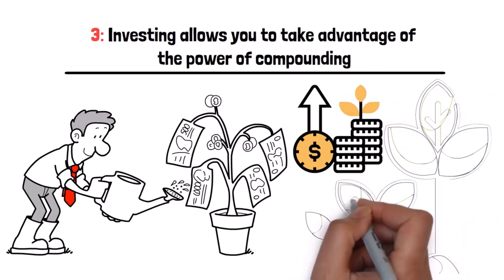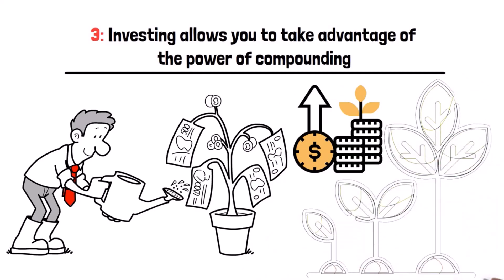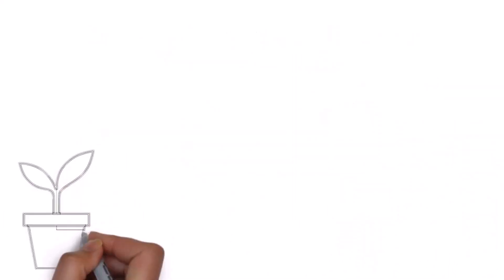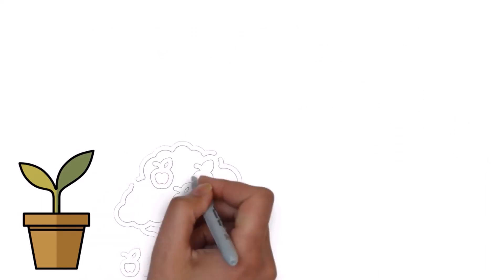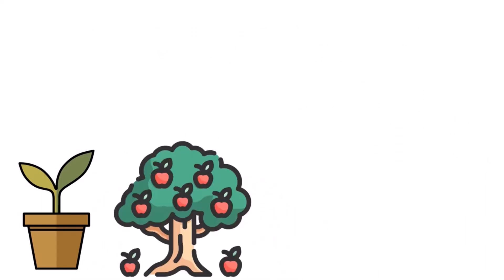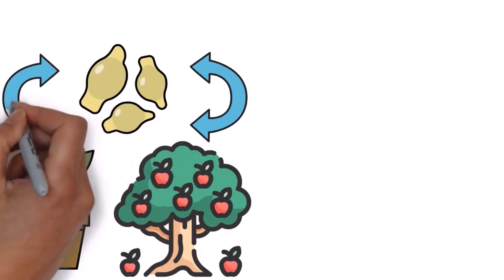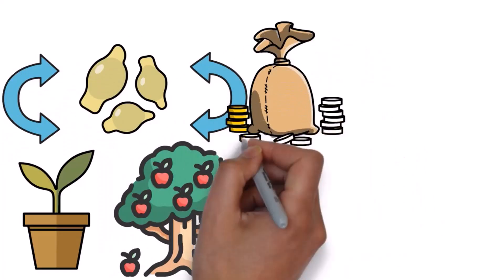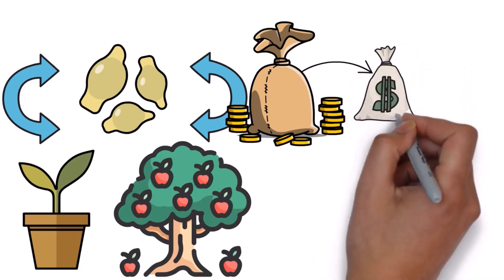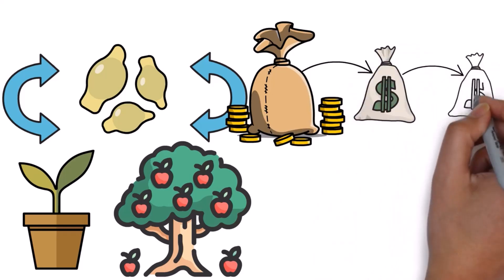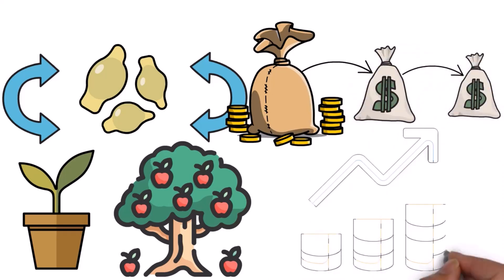At first it's small, but with time it blossoms and bears fruit. The next season, those fruits become seeds and the cycle repeats. Compounding works similarly - your money earns interest, and then that interest earns more interest, snowballing your wealth over time, just like the tree multiplying its fruits.